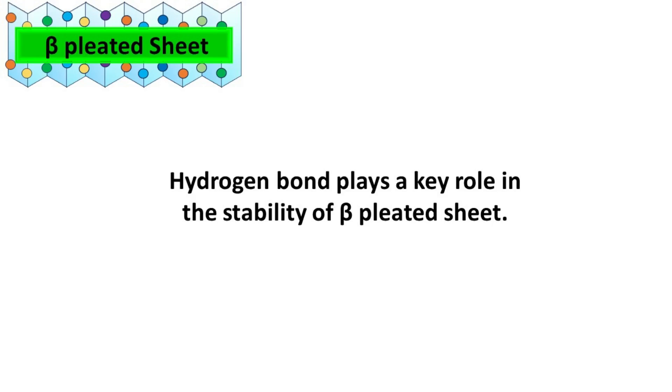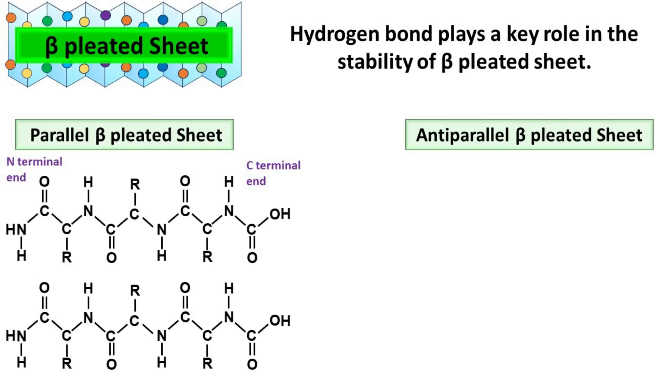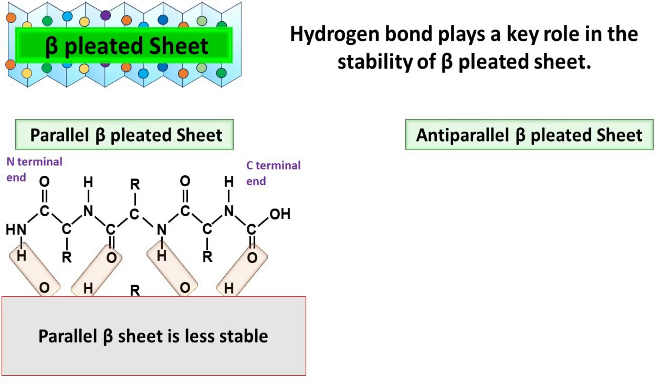The hydrogen bond plays a key role in the stability of Beta-Pleated Sheet. In parallel Beta-Pleated Sheet, the hydrogen bond between NH and CO groups is formed at an angle. As a result, the parallel Beta-Sheet is less stable.